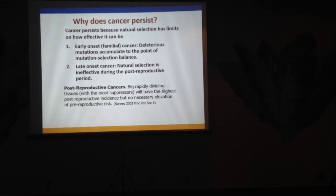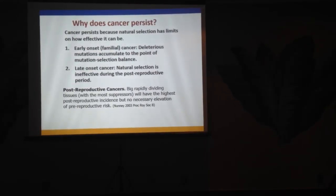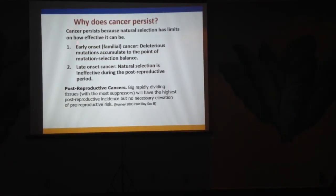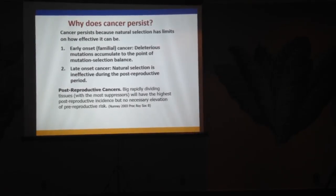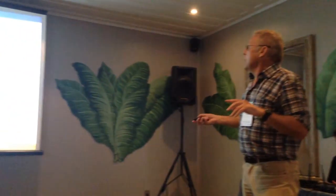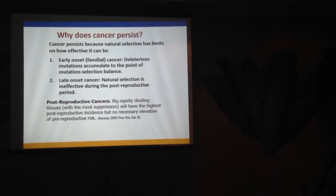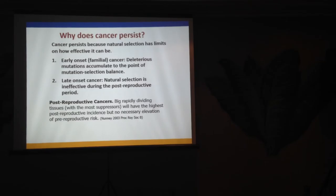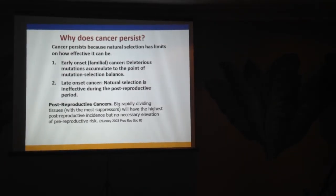Why does cancer persist? Many oncologists ask this question and put forward blatantly group selection arguments. But as a null hypothesis, we can raise two issues. First, early-onset familial cancer is simply mutation-selection balance in large part. I developed a more complex relationship for mutation-selection balance when you have a bunch of tumor suppressors controlling cancer in a particular tissue — giving a baseline for how common these things should be. They're well above that, so something else is going on. Second, for late-onset cancer, as organisms move through their reproductive life, the effectiveness of natural selection decreases. In old age, way past reproductive prime, natural selection hasn't set you up very well.